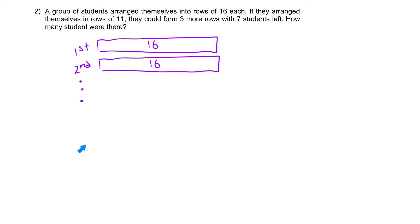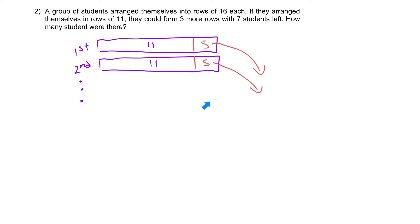Next, something happened — they decided to rearrange themselves into rows of 11. So out of each group of 16, they now want just 11. We partition this out: 5 people from each row are going to leave. Those 5 people from each row will exit to form new rows. All these groups of 5 will combine together and form 3 more rows, with 7 students left who can't join anywhere.